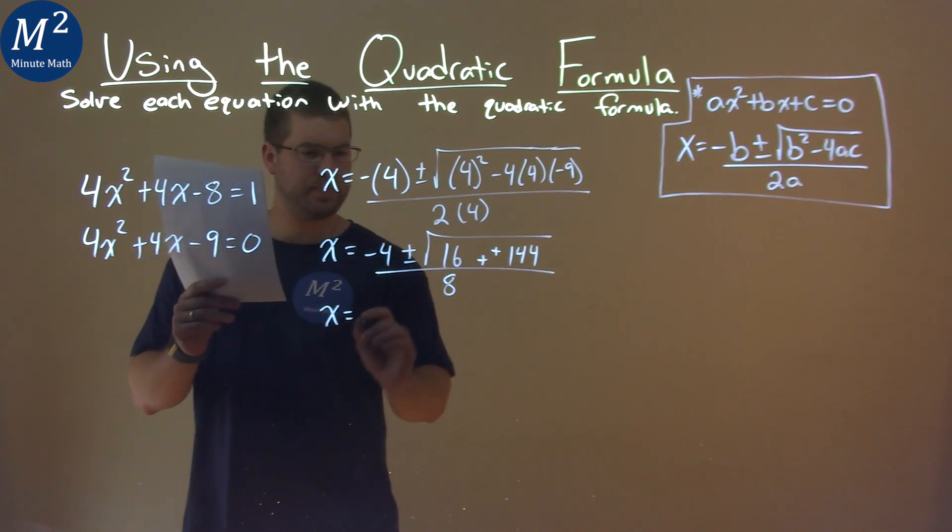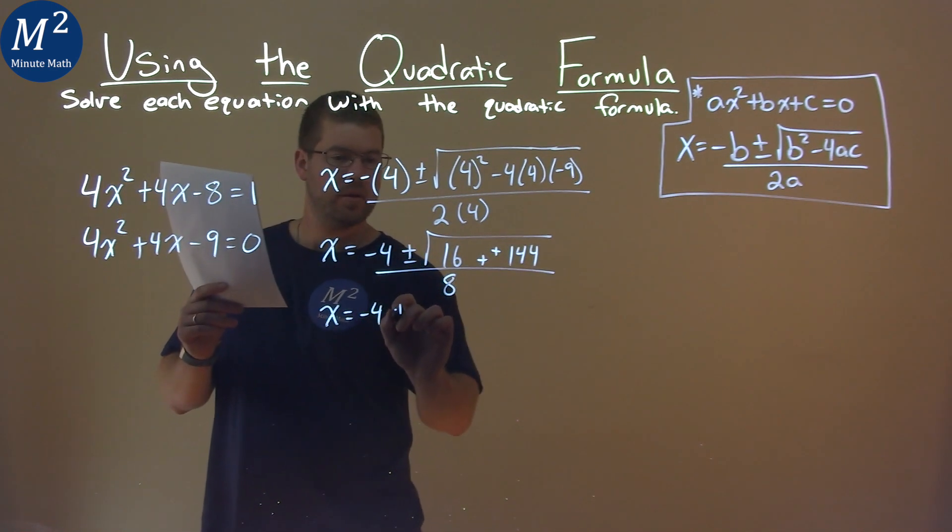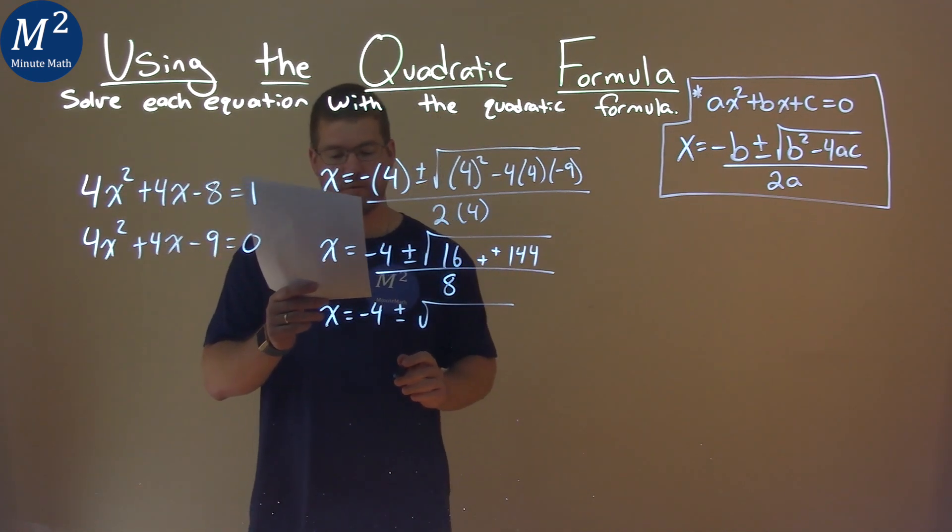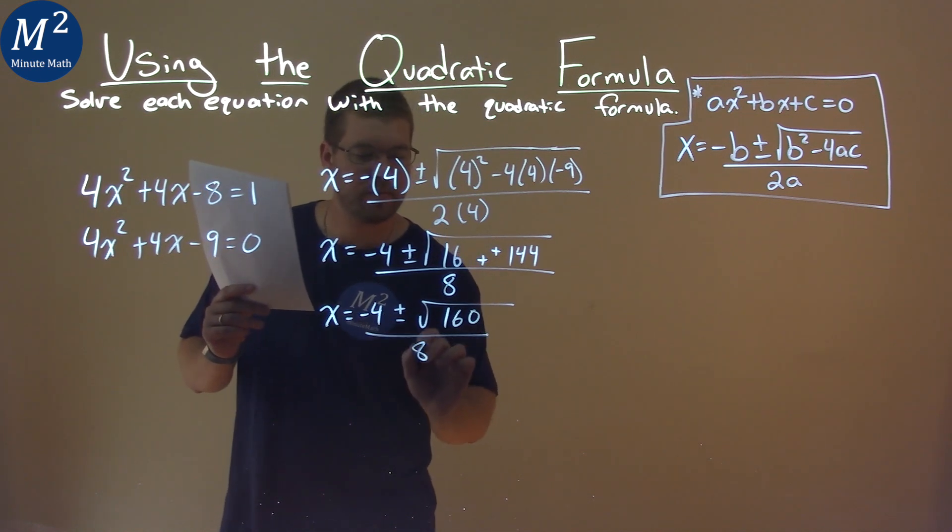x equals negative 4 plus or minus square root 16 plus 144 is 160, all over 8.